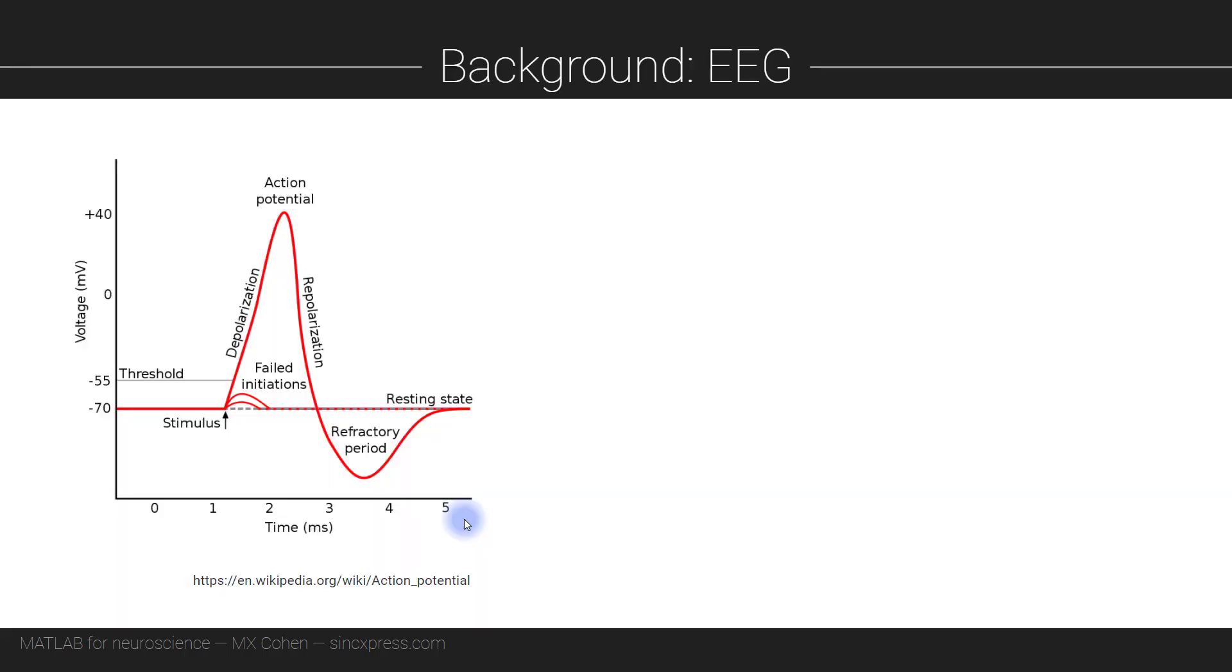In the previous module, we were studying the action potentials of individual neurons, which reflect voltage fluctuations across the membrane of each neuron. Now, the voltage potential from a single neuron is too weak to be measured from far away from that neuron, let alone from outside the head.